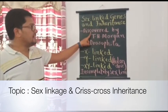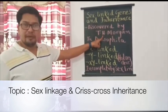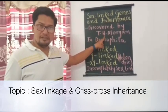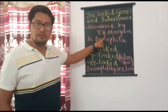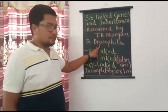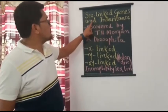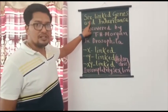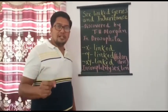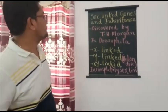Sex-linked inheritance was actually discovered by T.H. Morgan. He is a very famous scientist in the field of genetics, after Gregor John Mendel. T.H. Morgan conducted a series of experiments on fruit fly, whose scientific name is Drosophila melanogaster. By conducting experiments on Drosophila, T.H. Morgan discovered a special pattern of inheritance called sex-linked inheritance.